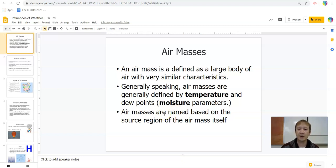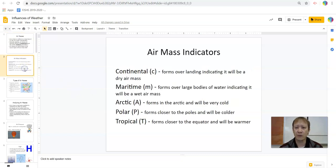They're normally named after the regions that they came from. A lot of times we just give them indicators or a simple letter to indicate where it comes from. So there are a few key ones that we're looking at for our area. We have our air mass indicators: continental, maritime, arctic, polar, and tropical.